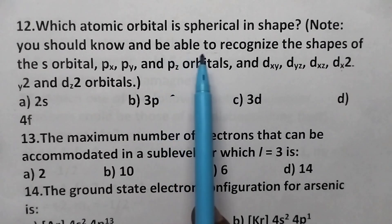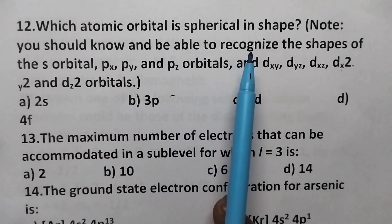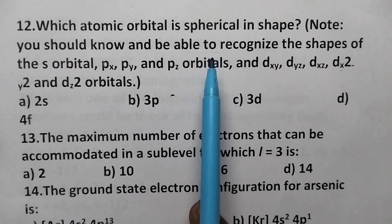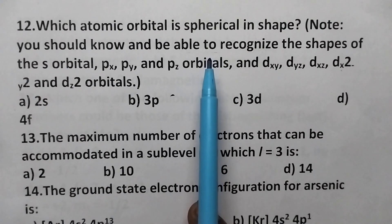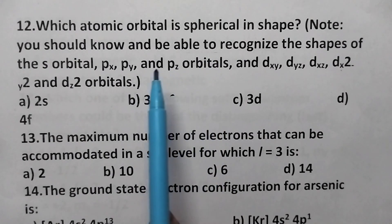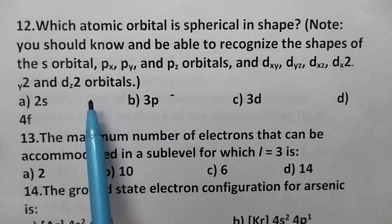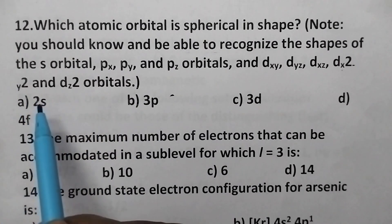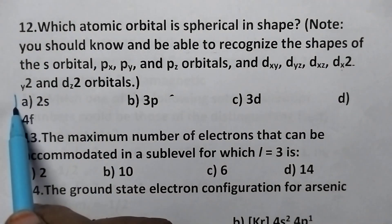Which atomic orbital is spherical in shape? Coming to the atomic orbitals: S has a spherical shape, P has a dumbbell shape, and D has a double dumbbell shape. So the S orbital has a spherical shape and option A is the right answer.